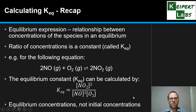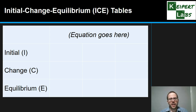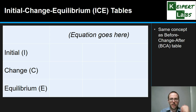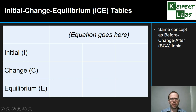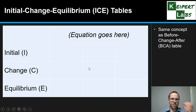That last point about equilibrium concentrations is exactly what the ICE table addresses. An ICE table — initial, change, equilibrium — is similar to the before, change, after (BCA) table used for moles in chemical reactions. We set it up with a column listing I, C, and E rows, and columns underneath each substance in the chemical equation. So two reactants and one product gives three columns, one reactant and one product gives two columns, and so on.